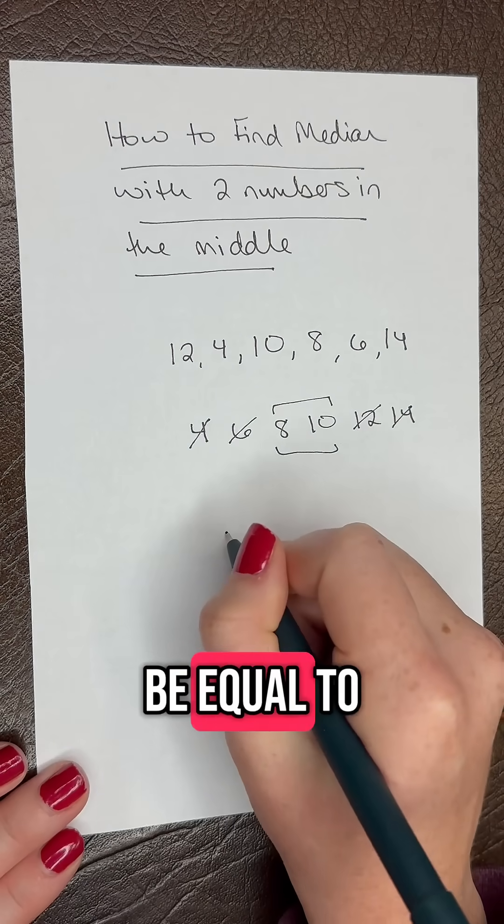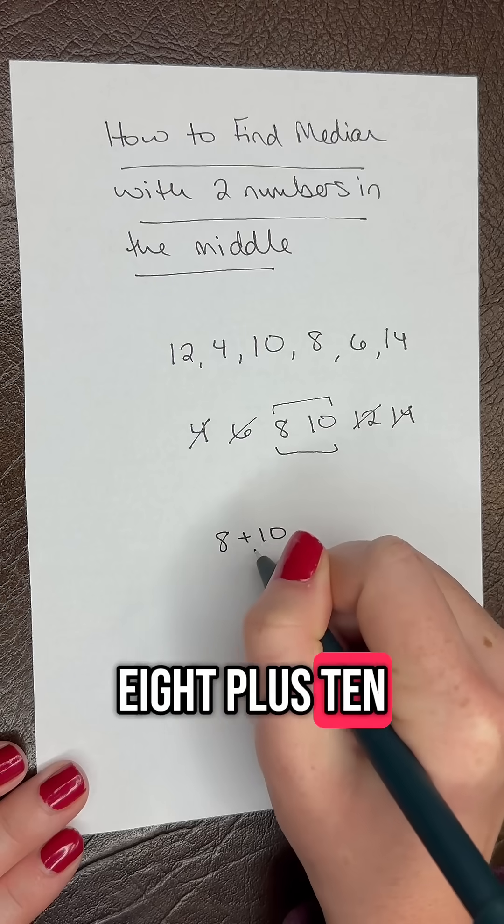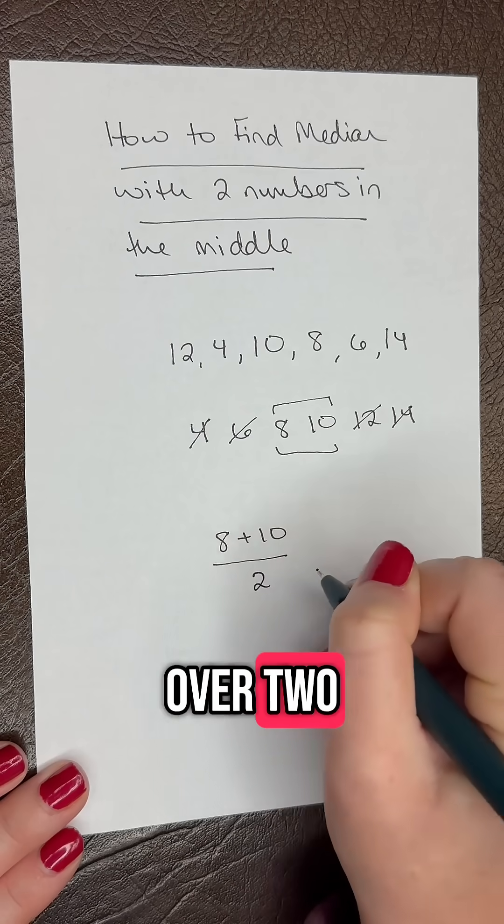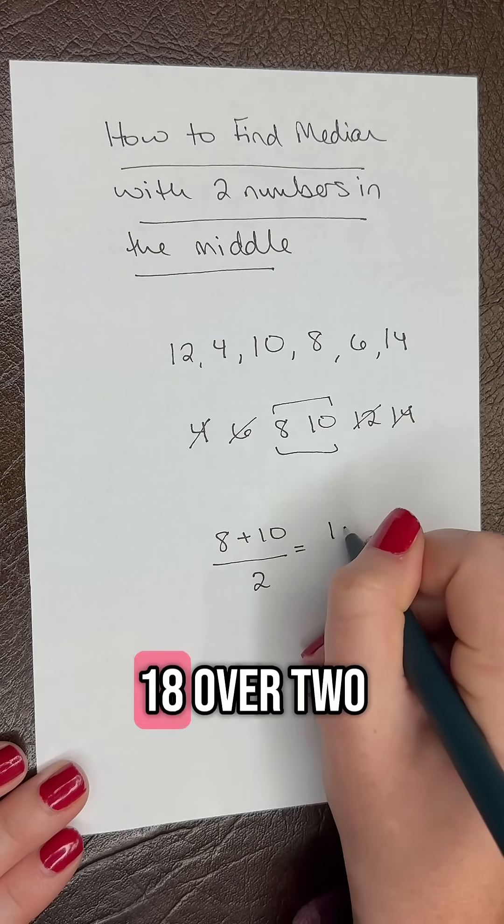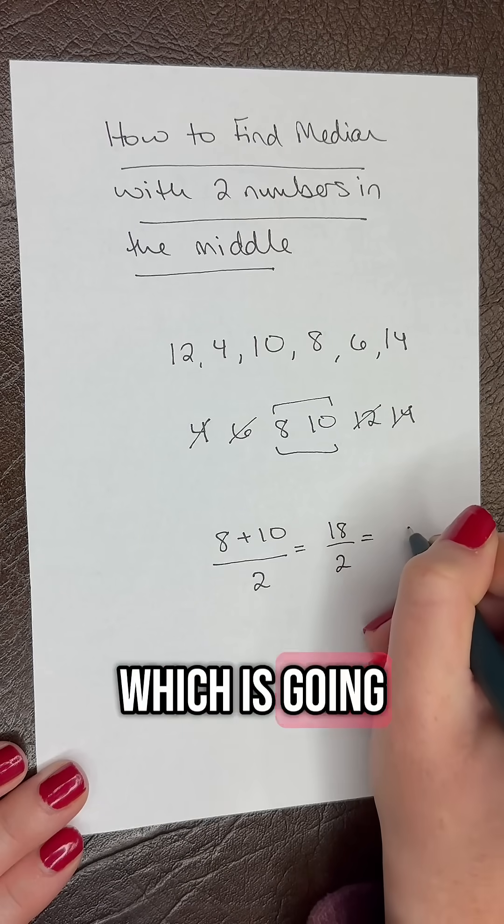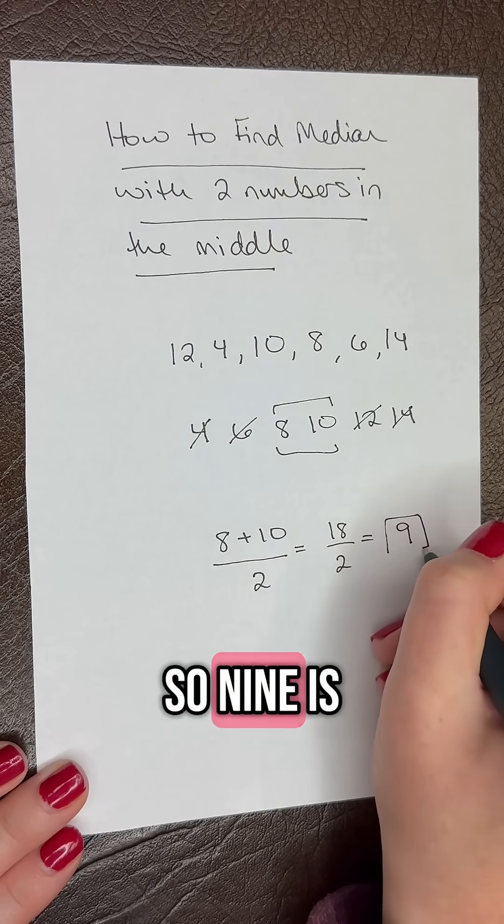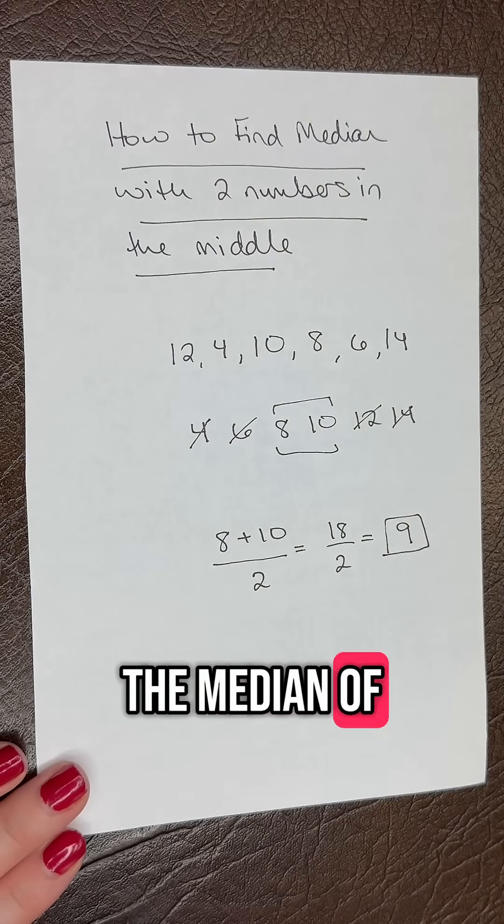So our median is going to be equal to 8 plus 10 over 2. So that's going to give us 18 over 2, which is going to equal 9. So 9 is going to be the median of this data set.